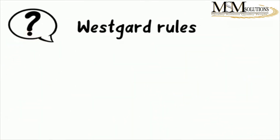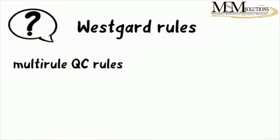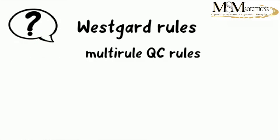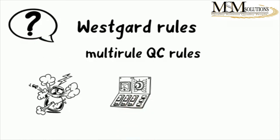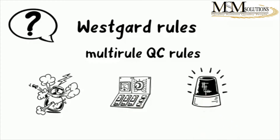What are the Westgard rules? Westgard rules are multi-rule QC rules that help analyze whether an analytical run is in control or out of control. They use a set of statistical patterns, each being unlikely to occur by random variability, thereby raising suspicion of faulty accuracy or precision in our measurement results.